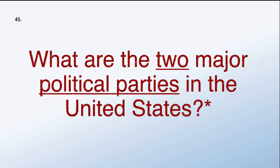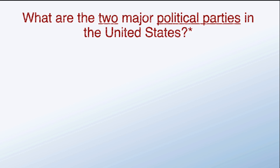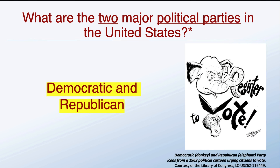What are the two major political parties in the United States? Democratic and Republican — the two major political parties are the Democratic and Republican parties.